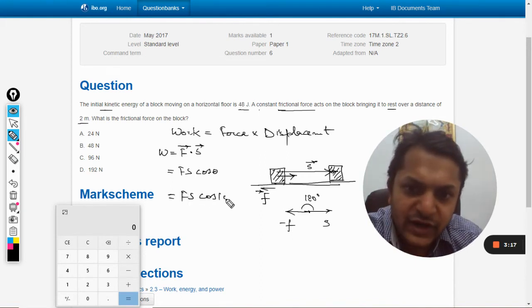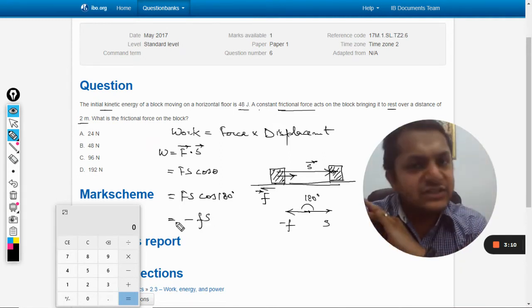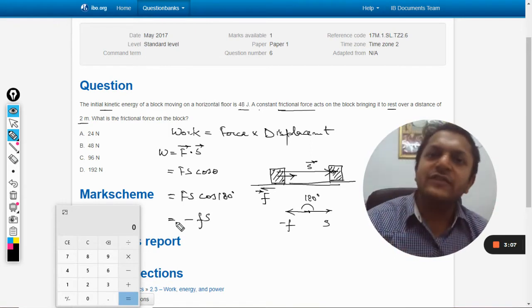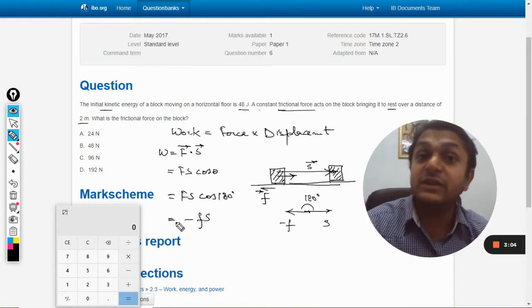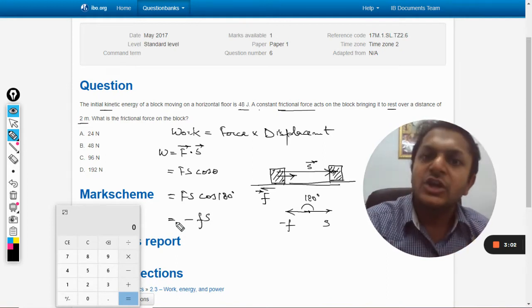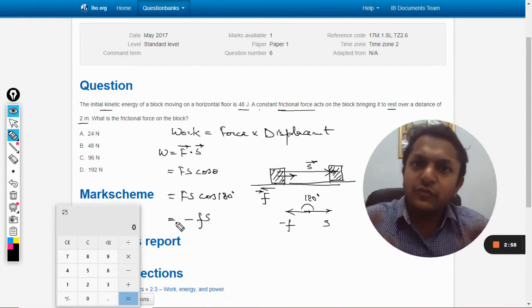Cos(180°) equals -1, so it will be -F×s. Overall, because the friction is applied in the backward direction but the displacement is taking place in the forward direction, we can say that the work done is negative. The force wants you to move towards the left...